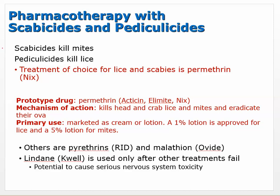Pharmacotherapy uses scabicides to kill mites and pediculicides to kill lice. The treatment of choice for both lice and scabies is permethrin — the trade name Nix is one product that contains permethrin. That's the prototype drug we're going to cover. Permethrin kills head and crab lice and mites and eradicates their ova (eggs). It's primarily marketed as a cream or lotion — a 1% lotion is approved for lice and a 5% lotion for mites. Other agents include pyrethrins and malathion, which are also used in crop treatments.